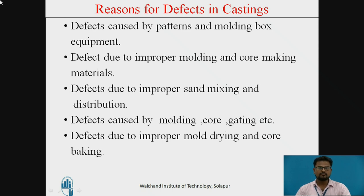Next are defects due to improper molding and core making material. Blow holes are one such defect — they are smooth, round holes, specifically entrapped bubbles of gas with a smooth wall. Causes include excessive moisture in the molding sand, low permeability, excessive fine grain sands, and extra hard rammed sands. Remedies include improving the permeability of the mold and cores, and avoiding excessive ramming of the molding sand.